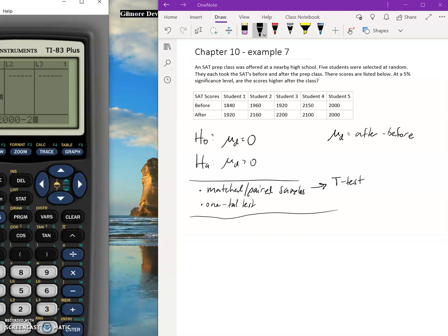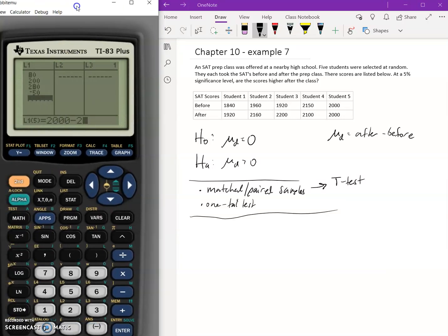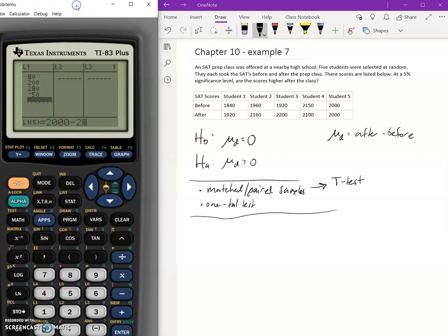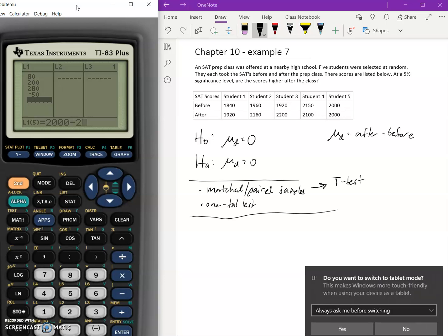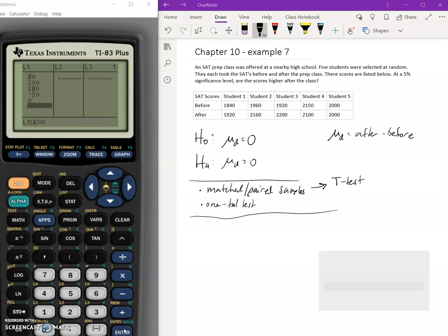I have 2100 minus 2150, and then 2000 minus 2000. Wait, lost the calculator, let me get that back. So we have 2000, press enter. Okay, so this is our list of all the differences.